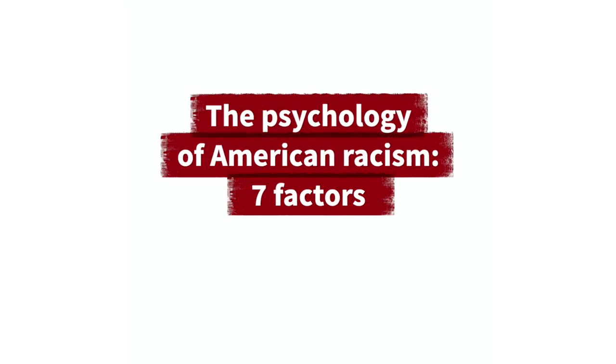Hey everyone, my name is Steven Roberts and I'm a professor here in the psychology department at Stanford University. I'm talking to you at an intense moment in our nation's history. If you turn on the television you'll see that the racial tensions and divisions that have defined our country since its inception continue to define it today. I want to take a short minute of your time to explain from a psychological perspective how American racism comes to be.